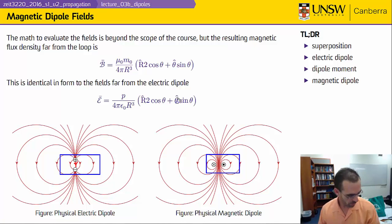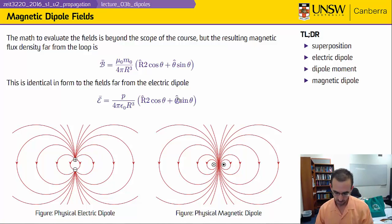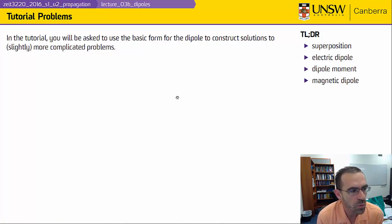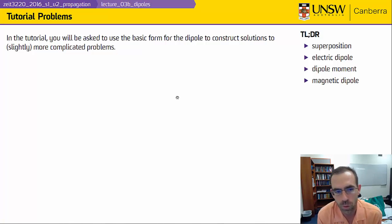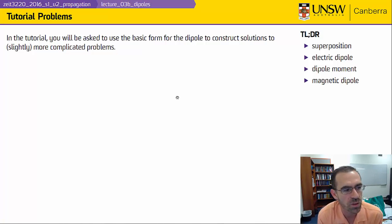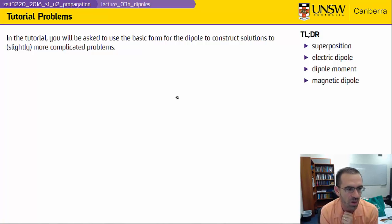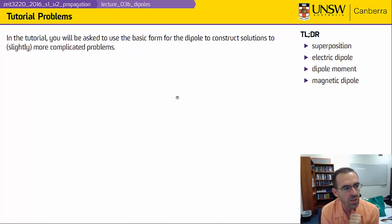That brings us to an end for this lecture. In the tutorial problems, which you should take a look at, there are basically two problems — one for electric and one for magnetic dipoles — and we'll talk about those in class. You're going to be asked to use this basic form to construct solutions to slightly more complicated problems, to see if you can understand how to apply these concepts.